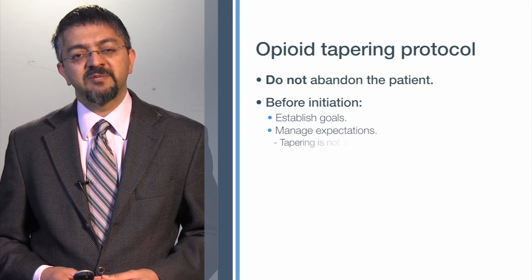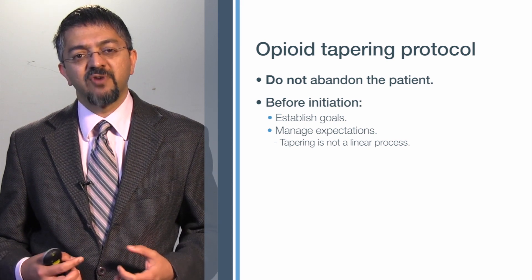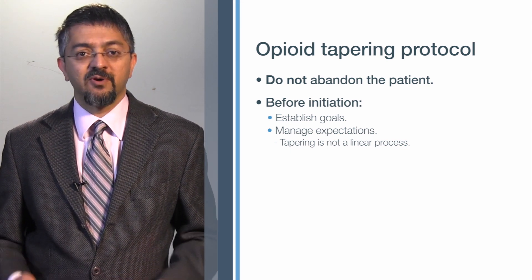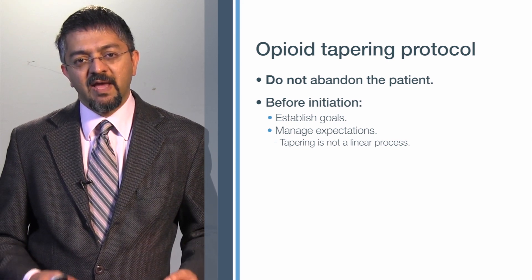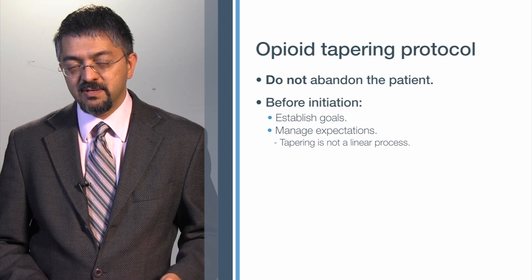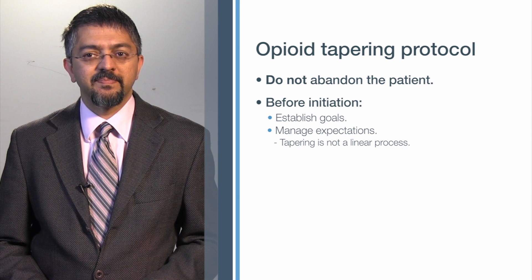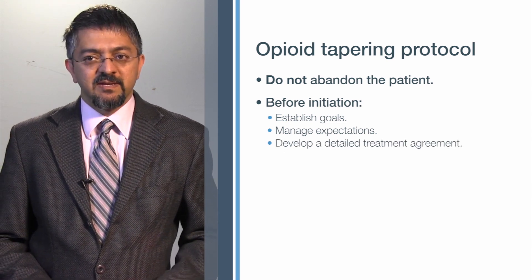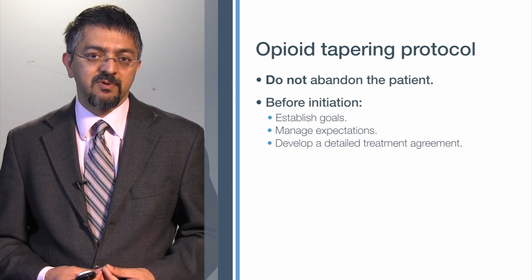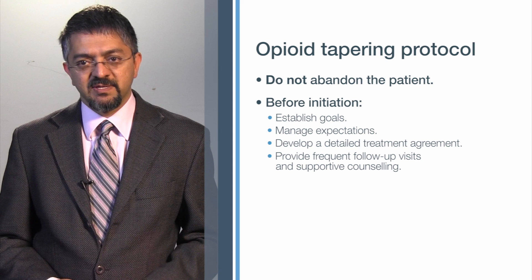It is important to manage the expectations of the patient as to what can be accomplished. It is often best to frame this as a trial taper with a clear exit strategy as to what will be done if the taper does not work. Remember that tapering is never a nice linear process — it can be quite a rocky road. It is important to have a detailed treatment agreement covering what you can offer the person and what they are willing to do to ensure the success of the taper. Provide frequent follow-up visits and supportive counseling.